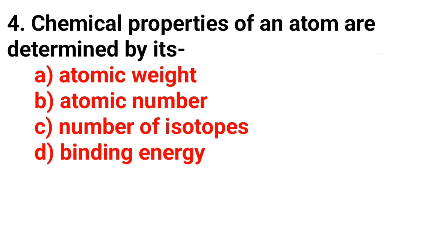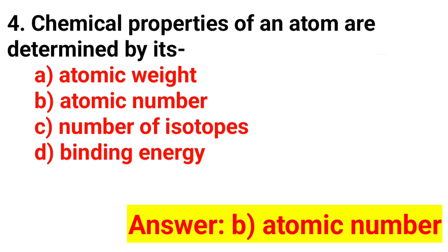Question 4. Chemical properties of an atom are determined by its? The answer is Option B: Atomic number.